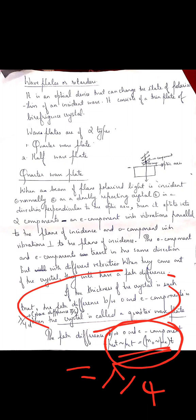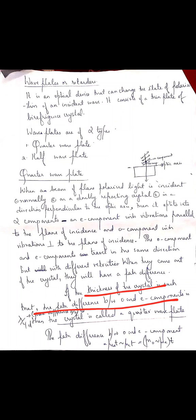If this difference (mu-O minus mu-E) into T is equal to lambda by 4, then my crystal is called a quarter wave plate. Mu-O and mu-E are fixed for a given crystal, and lambda is fixed for the light. So, the deciding parameter is the thickness of the crystal. You just adjust the thickness of the crystal to make (mu-O minus mu-E) into T equal to lambda by 4.